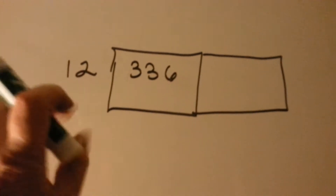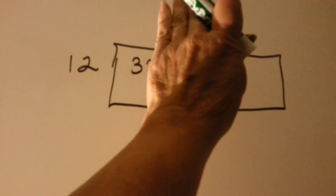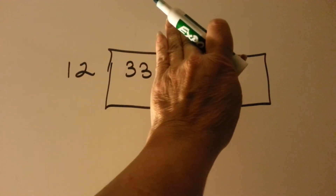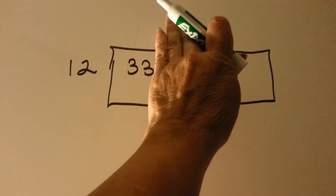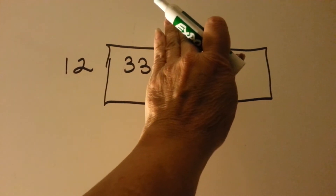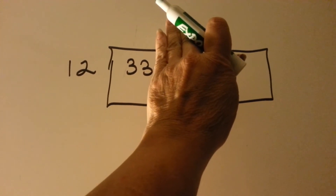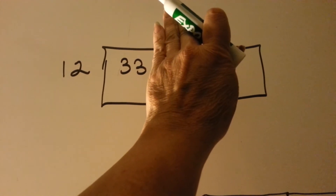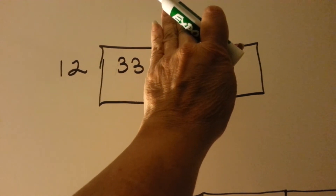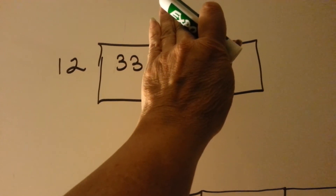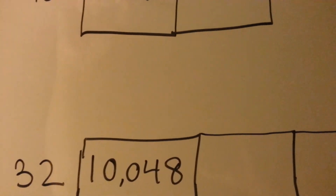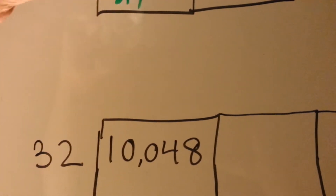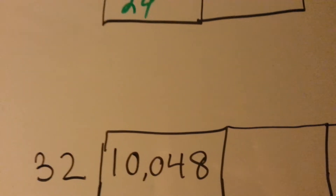We ask ourselves, how many times can 12 go into 3? Well, it can't, but it can go into 33. How many times? 12 times 2 is 24. 12 times 3 is 36 — that's too big. We're going to have to go back to the 2. So we'll put a 2 here, and 12 times 2 is 24. And now we do our subtraction.